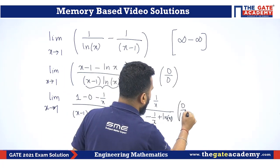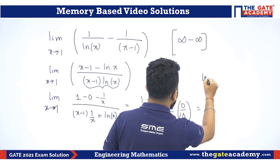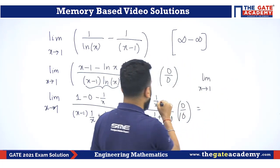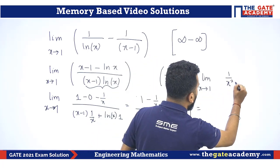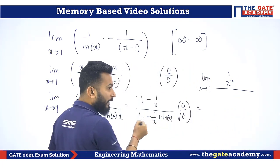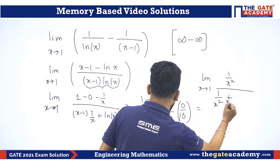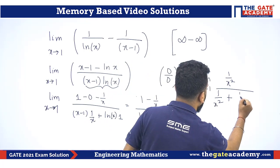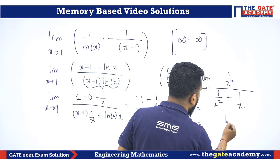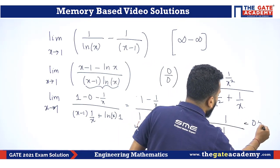If you again apply L'Hopital's rule, it will be limit x tending to 1 minus 1 by x differentiation is 1 by x square divided by constant differentiation 0, then again it is 1 by x square plus ln x differentiation is 1 by x. If you finally substitute 1, it will be 1 by 1, 1 by 1 plus 1 or it is coming out to be 0.5.